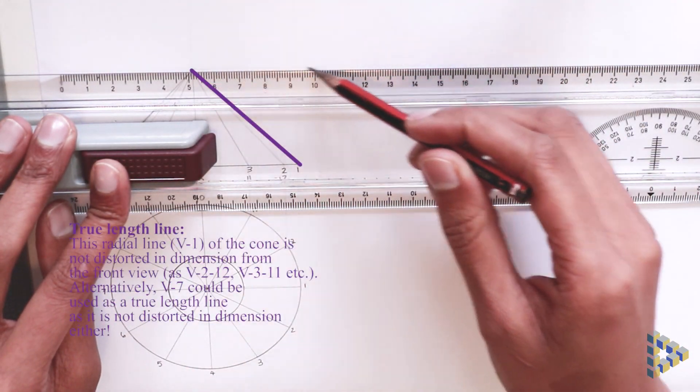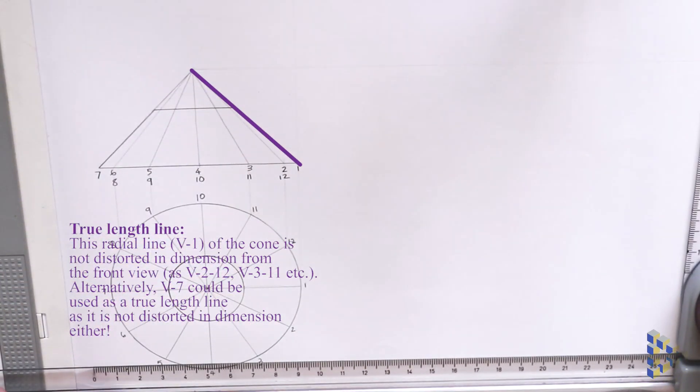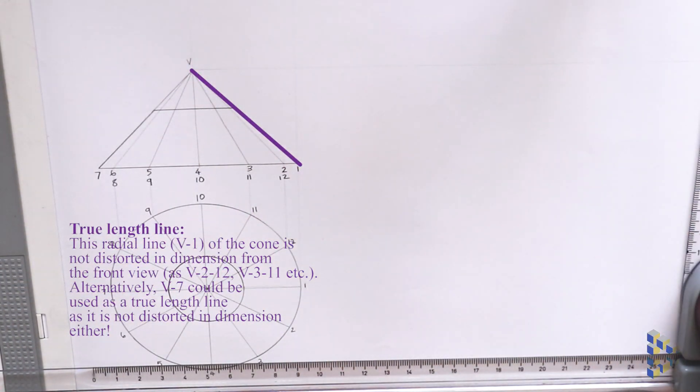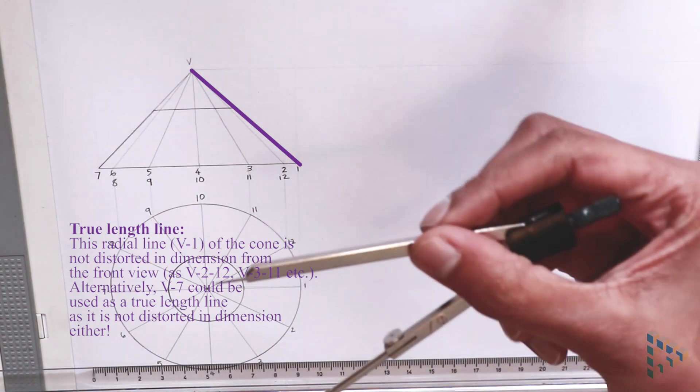Next, I project across the vertex to start the development in line with the front view. I can measure off the radial length of the cone using the true length line,